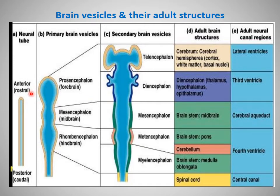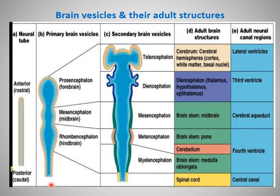As discussed in the previous lecture, the neural tube forms during the third week. After closure of the anterior and posterior neural pores, the neural tube forms certain brain vesicles called the primary brain vesicles. Caudal to the fourth pair of somites, the neural tube forms the spinal cord, and cranial to the fourth pair of somites it shows dilatations called the primary brain vesicles.